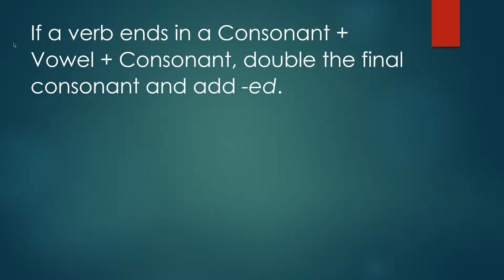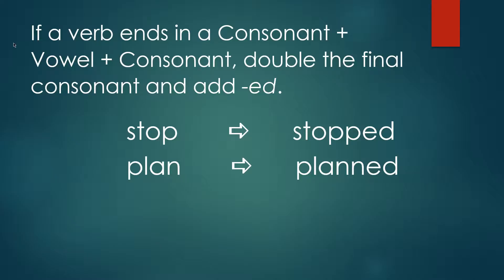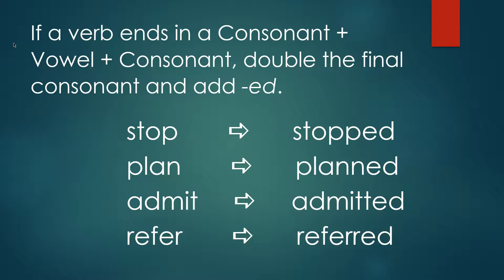If a verb ends in a consonant, vowel, consonant, double the final consonant and add ED. The word stop ends in T, O, P. T is a consonant, O is a vowel, P is another consonant. So to add ED, we first double the P and then add ED. Stop becomes stopped, plan becomes planned, admit becomes admitted, refer becomes referred.